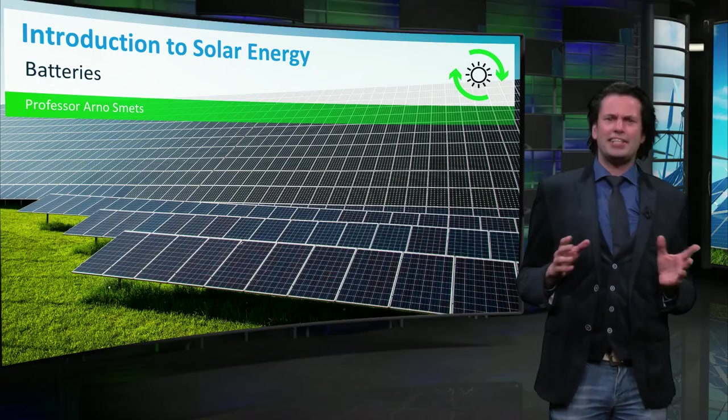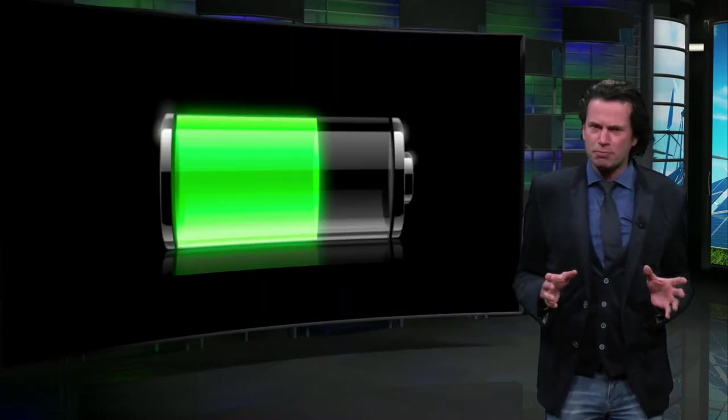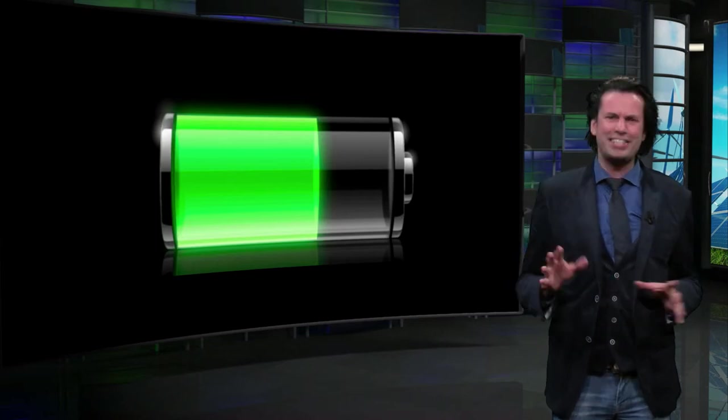Currently a staggering 1.3 billion people are still without electricity. Most of them live in rural areas where there is no power grid available. This is when off-grid PV systems can provide an amazing solution.